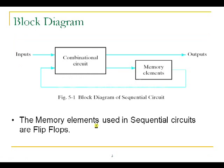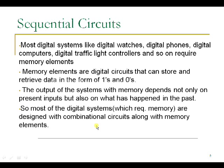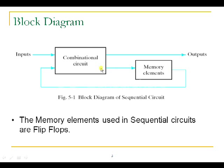Now let us see the block diagram of sequential circuits. This block diagram shows a sequential circuit designed with a combinational circuit and a memory element. The output of the combinational circuit is given as input to the memory element, and the output of the memory element is given as feedback input to the combinational circuit. So the combinational circuit's output depends not only on present inputs but also on the past output coming from the memory element.